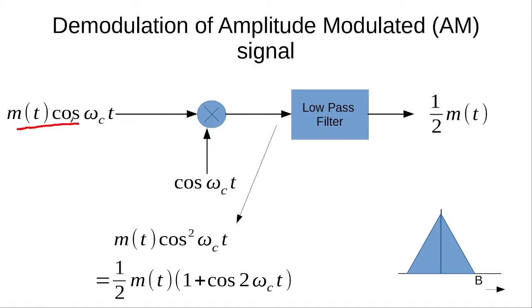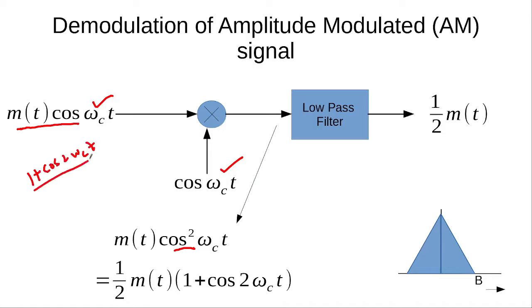This modulated signal can easily be demodulated at the receiver by multiplying it again with the carrier cos(ωct), which is the same carrier used at the transmitter. When we multiply these two signals, we get m(t)cos²(ωct). We know that cos²(ωct) is equal to (1 + cos2ωct) / 2.